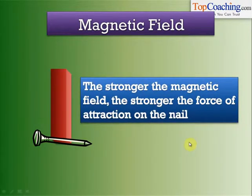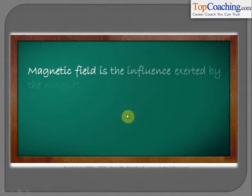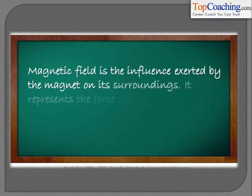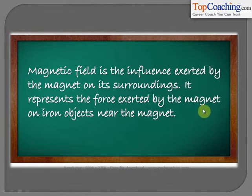The stronger the magnetic field, the stronger the force of attraction on the nail. The magnetic field is just a term defined to understand the influence of a bar magnet. Magnetic field is the influence exerted by the magnet on its surroundings — it represents the force exerted by the magnet on iron objects near the magnet.